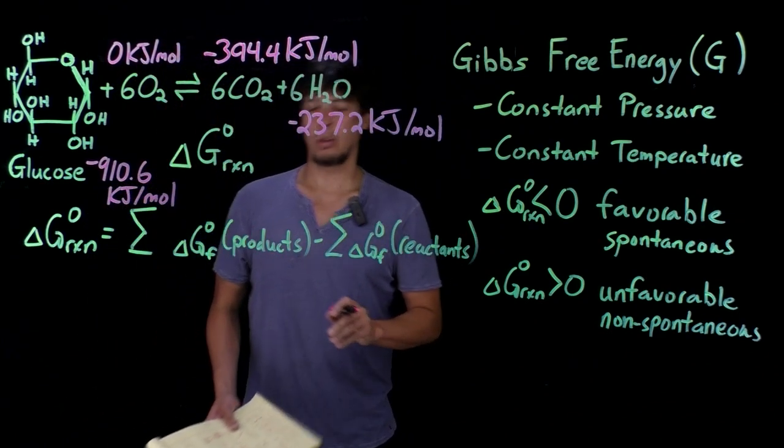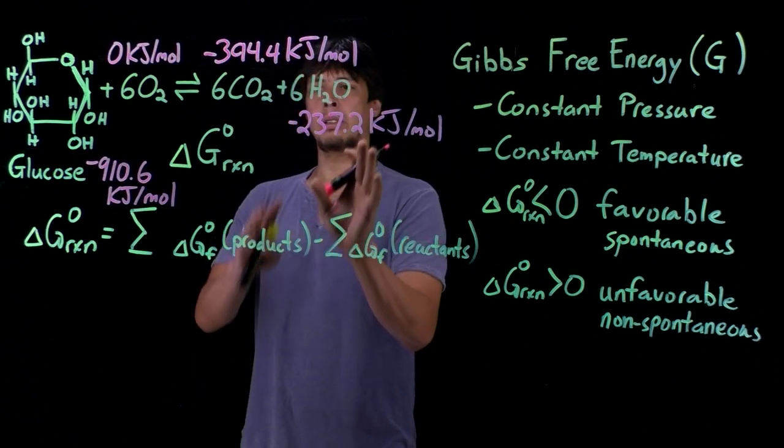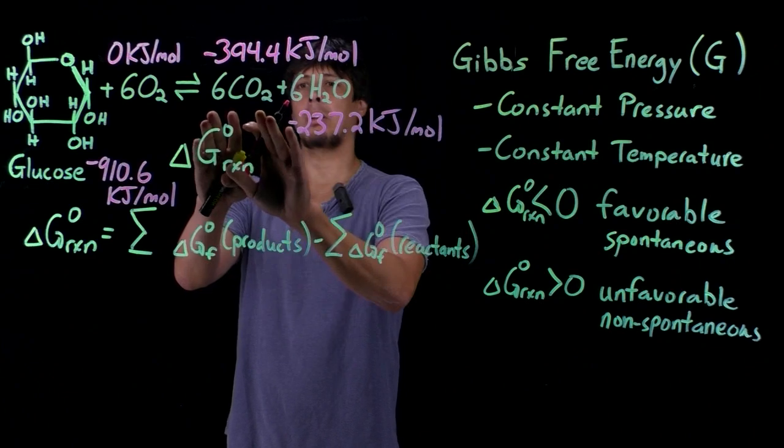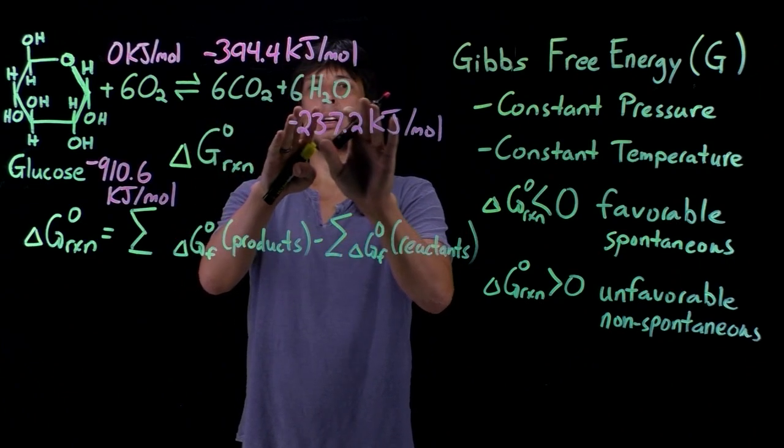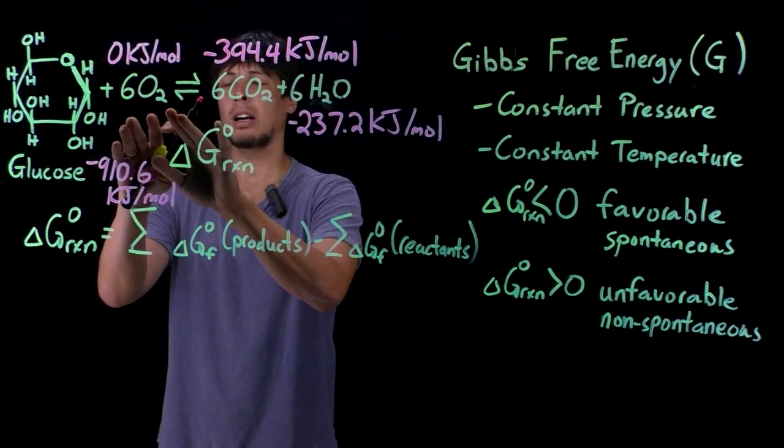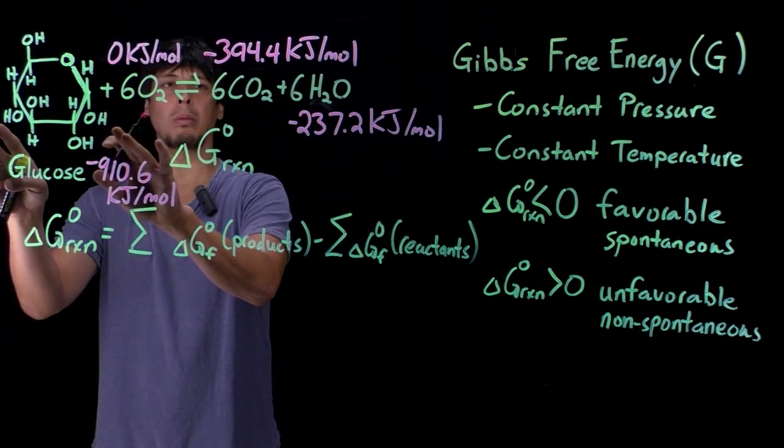Now what we do for each of these, we see from the stoichiometry of the balanced equation that there are six molecules of carbon dioxide, six molecules of water on the product side, six molecules of oxygen on the reactant side, and only one molecule of glucose.